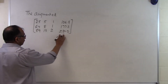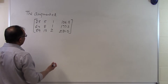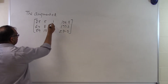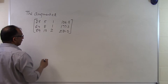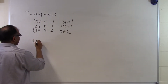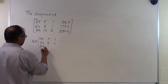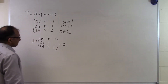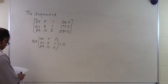The augmented matrix has 3 rows and 4 columns, so the largest square submatrix I can get is of order 3x3. Looking at the 3x3 submatrix [25, 5, 1; 64, 8, 1; 89, 13, 2], its determinant is 0. So I still have to look at other 3x3 submatrices to see whether any give a determinant not equal to 0.